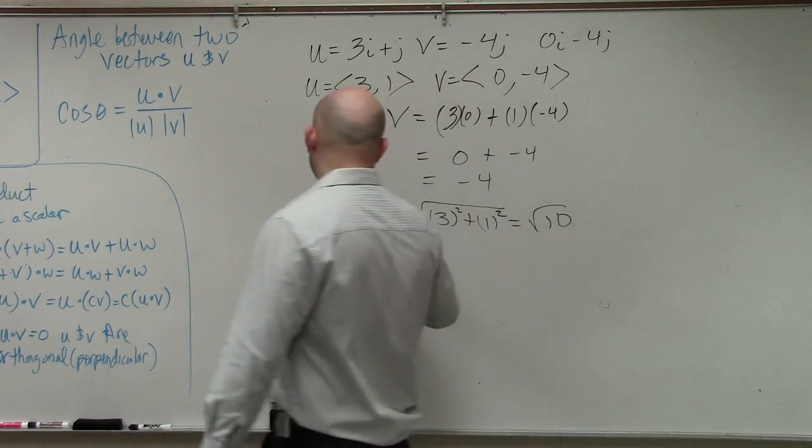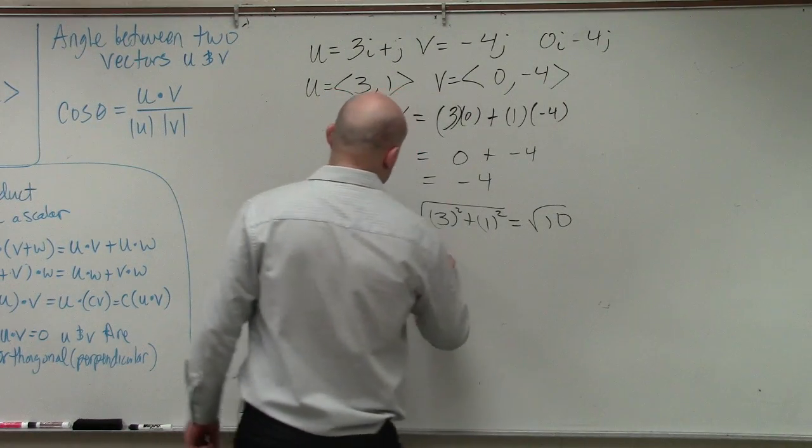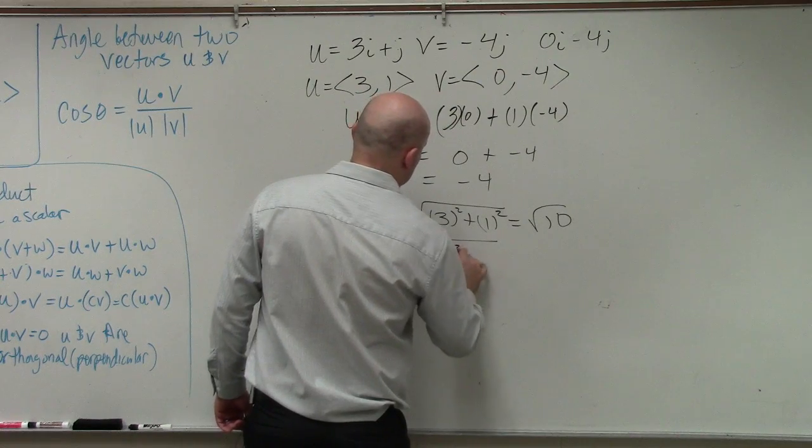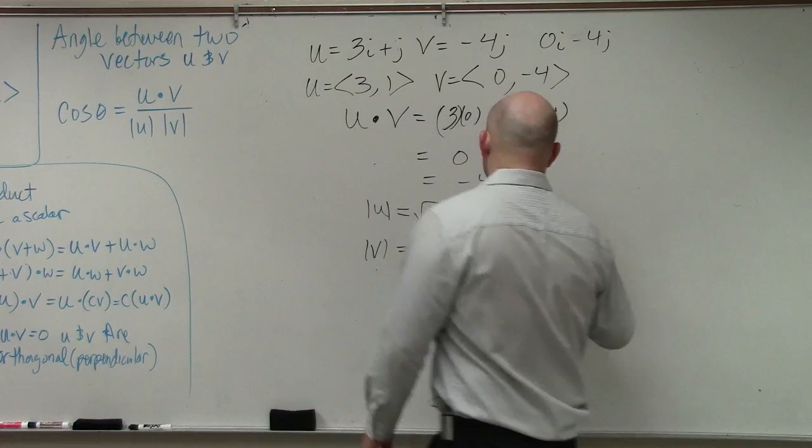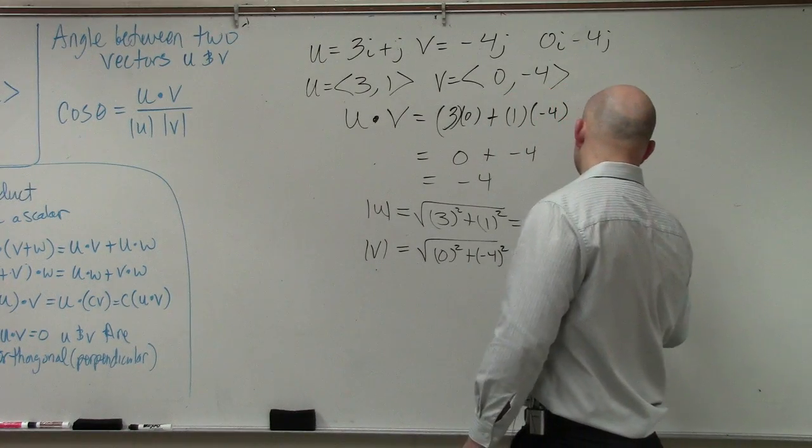Now we need to figure out the magnitude of v, which is the square root of 0 squared plus negative 4 squared, which equals the square root of 16, which equals 4.